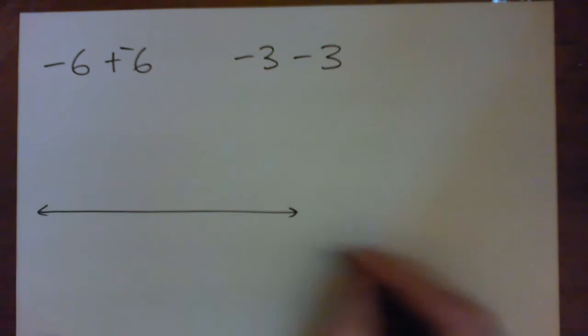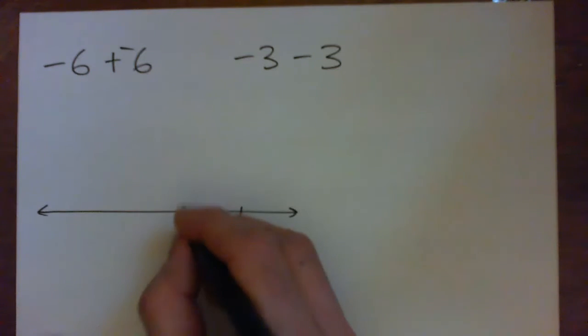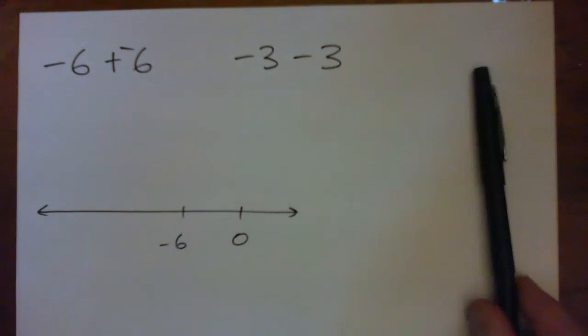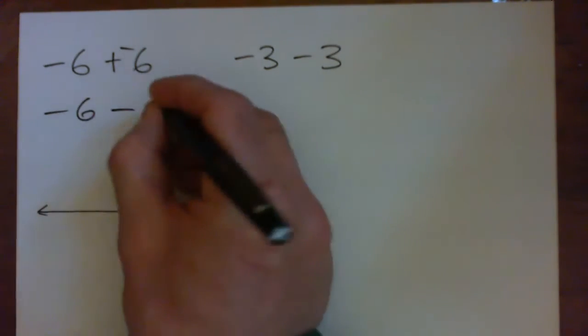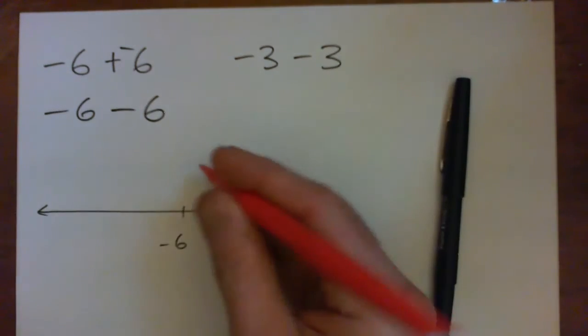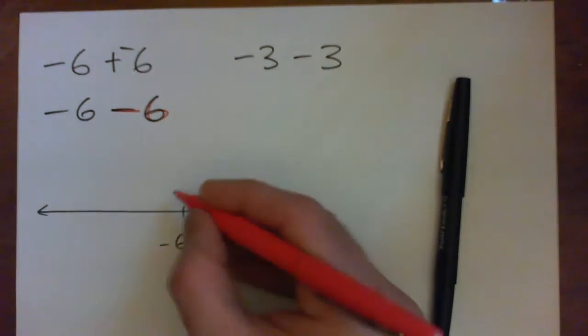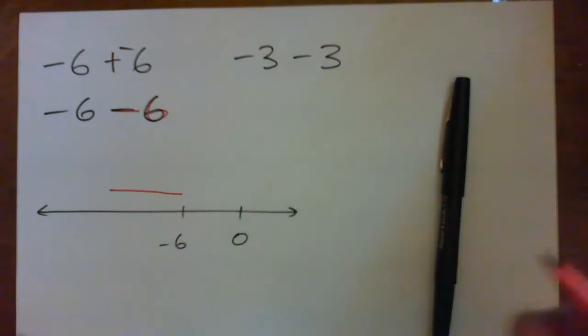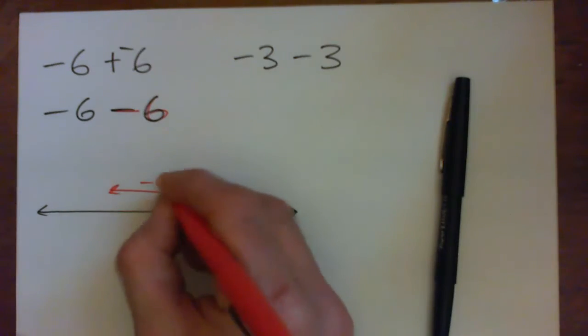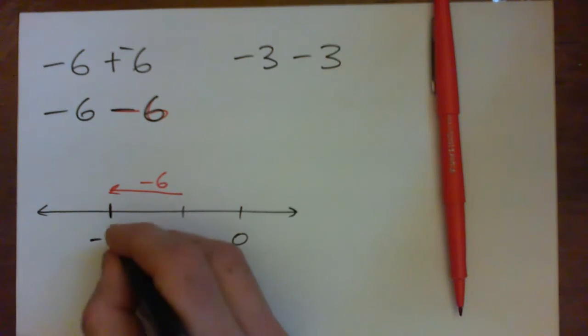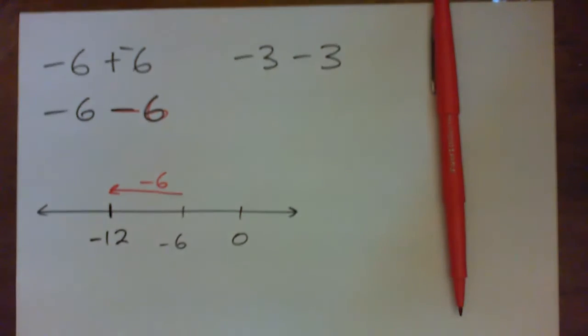Yet another way is think about a number line. Here's zero, here's negative six. Negative six minus six, or negative six subtract six, means you're going to go back six spaces. So if you go back six spaces you will then be at negative 12.